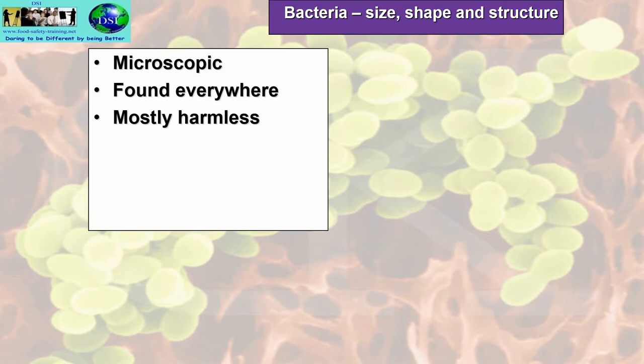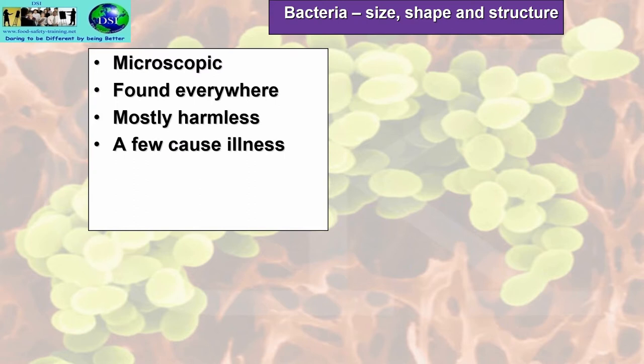Studies have shown that we're probably talking about 0.001% of all bacteria are pathogens or will cause harm. They're mostly pathogens because they start off as harmless bacteria — they're good for the environment, good for us — and then mutate into pathogens which cause us harm. A few cause illness, a very small percentage.